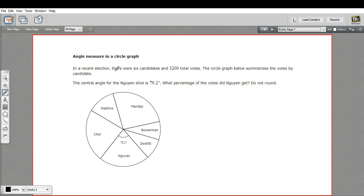Let's look at one more problem like this. In this one, we're given an angle measure and we're being asked to figure out what percentage of the votes this person got. So here's a graph that represents candidates in an election. It says there were 3,200 total votes. And here's the circle graph that accurately represents this. Nguyen got 79.2.